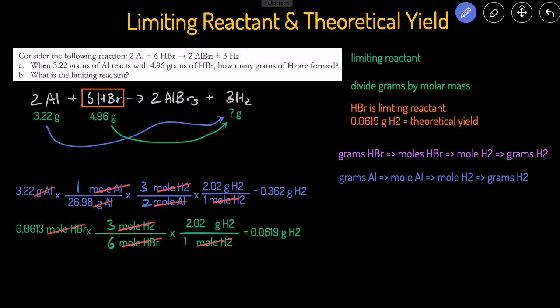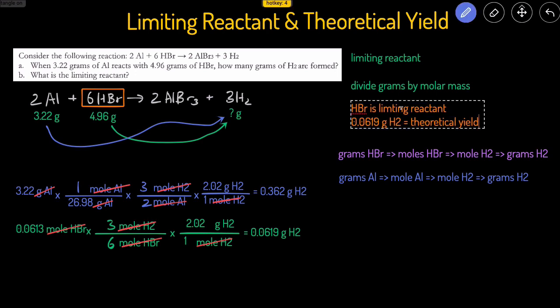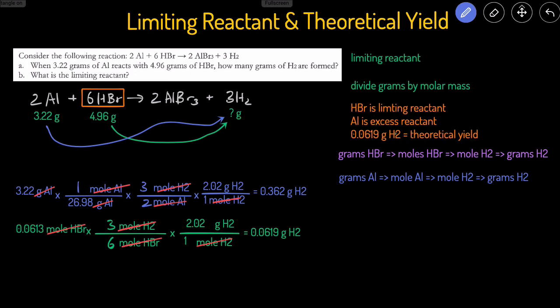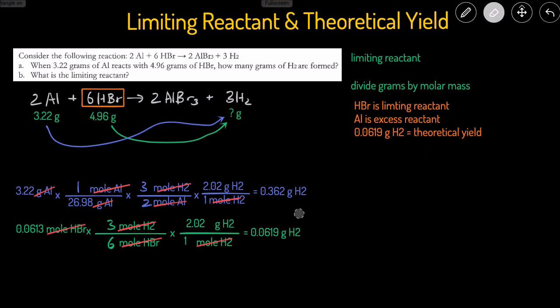To determine the limiting reactant, we compare which reactant produced the lesser amount of product. Since 0.0619 grams is less than 0.362 grams, HBr produced the lesser amount — meaning HBr was completely consumed first and is therefore the limiting reactant. Both techniques give the same answer. For the theoretical yield, always choose the smaller number: 0.0619 grams of H2. Since HBr is the limiting reactant, aluminum is the excess reactant — there will be aluminum left over after HBr is completely used up.